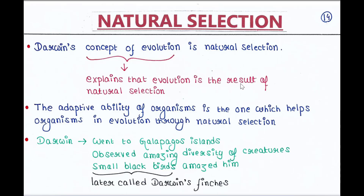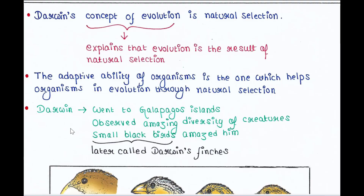Now during his journey, Darwin went to the Galapagos Islands. There he observed an amazing diversity of creatures. Of particular interest, small black birds — later called Darwin's finches — amazed him.